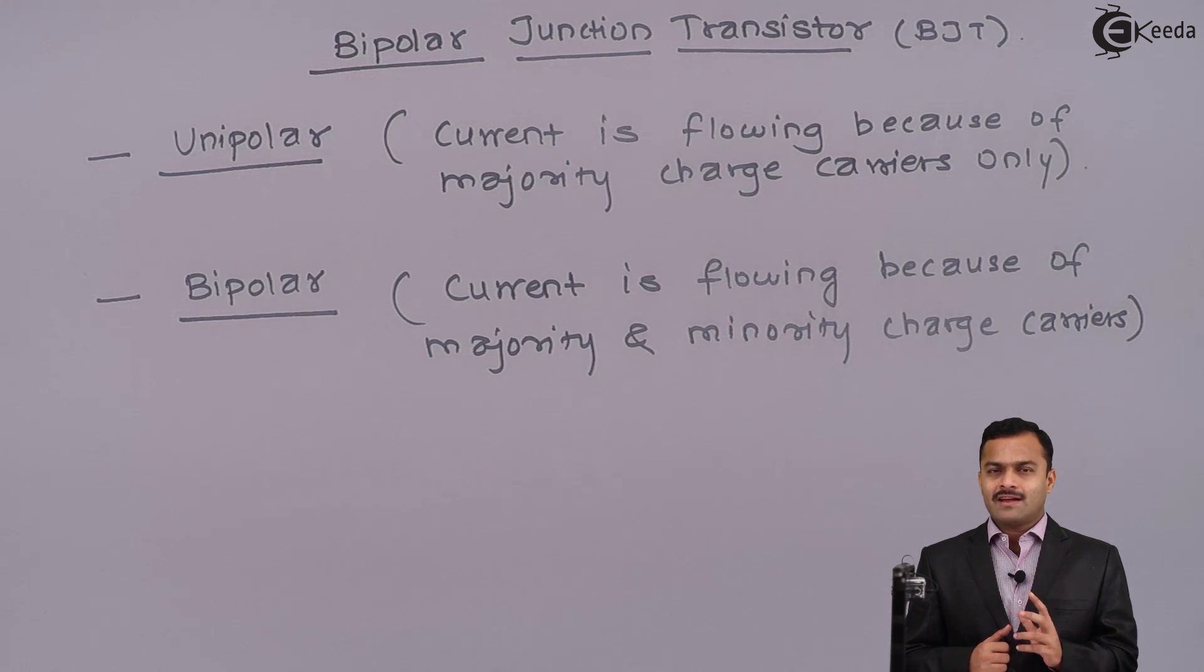Similarly for trivalent, one vacancy for electrons is there which we call holes. So holes are more in number, hence majority charge carriers are holes, whereas electrons are less in number, hence minority charge carriers are electrons. But in BJT, which is bipolar junction transistor, we are getting current because of both charge carriers.